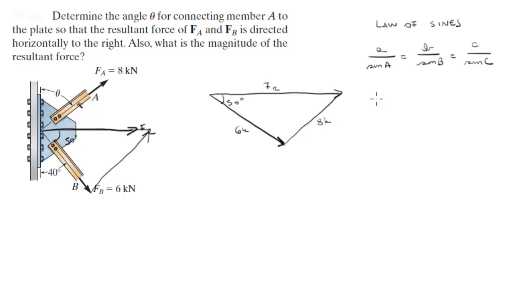So basically you know that 8k over sine of 50, which is the opposite angle, is equal to 6k over sine of this angle.